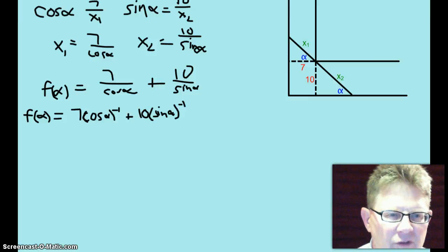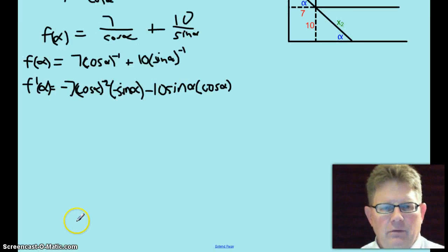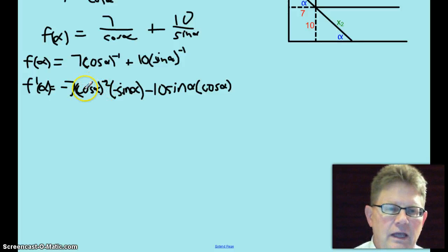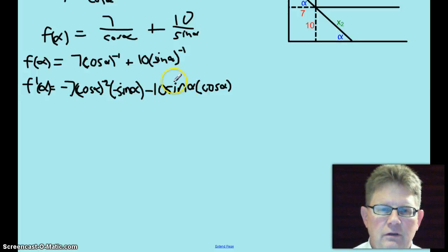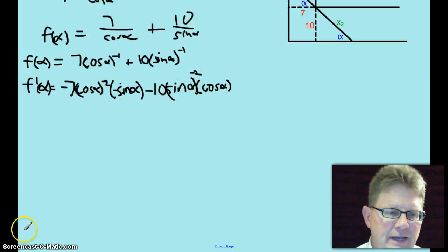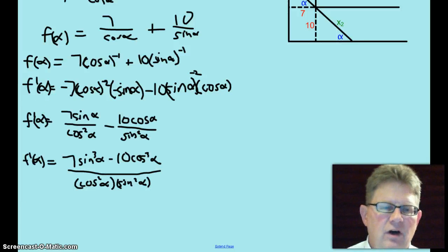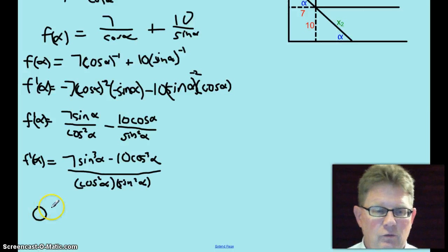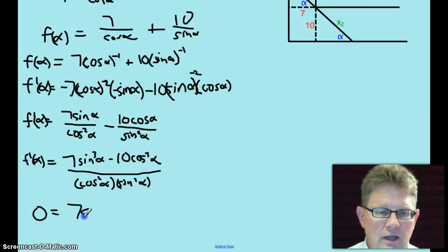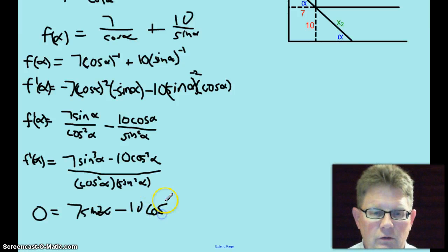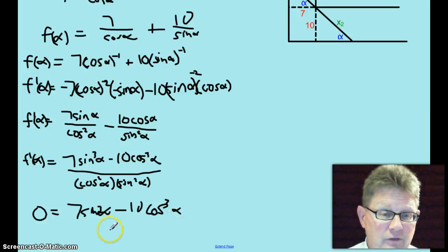I'm going to rewrite that, moving these up to the numerator and change the exponent. Now that I've rewritten it with negative exponents, I'm ready to take the derivative. The derivative f prime of alpha equals negative 7 cosine alpha to the negative 2, chain rule says take the derivative of cosine, negative sine alpha, minus 10 sine alpha to the negative 2 times the derivative of sine alpha, which is cosine alpha. I will rewrite that now. I also took the liberty of getting a common denominator and rewriting it. Okay, set that derivative equal to 0.